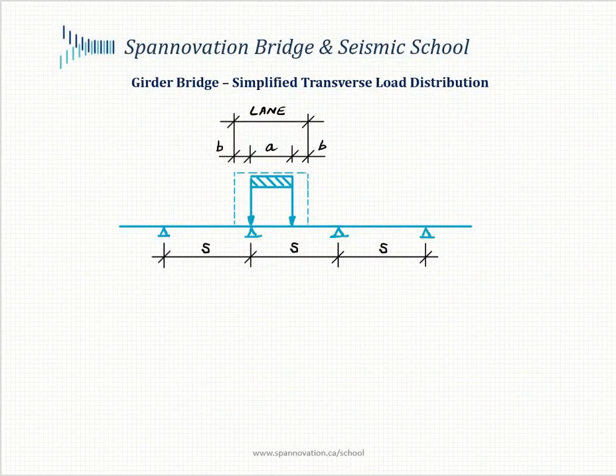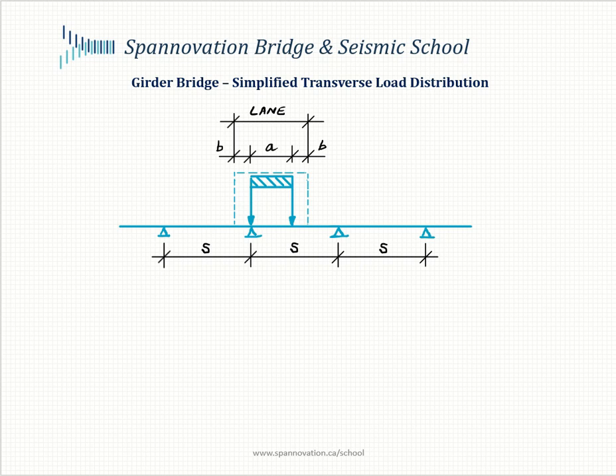Here is a simplified approach to obtain transverse load distribution factors for girder bridges that can be used during conceptual design, in lieu of the more complex methodologies provided in codes such as the Canadian Highway Bridge Design Code and AASHTO. After completing your longitudinal line girder analysis and deriving demands on a per-lane or per-truck basis, these need to be distributed to a per-girder basis.